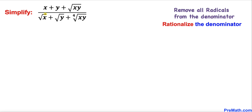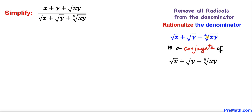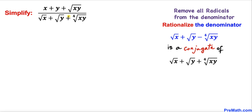Therefore we are going to rationalize this denominator. The expression square root of x plus square root of y minus the fourth root of x y is a conjugate of this denominator — we get a conjugate by switching the sign to negative. Now we are going to multiply and divide this given radical expression by this conjugate.